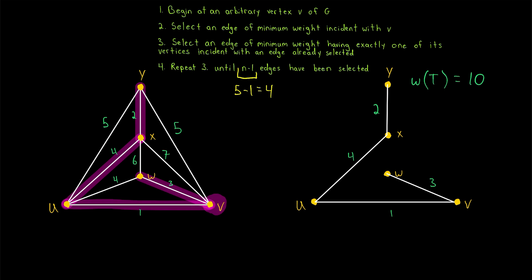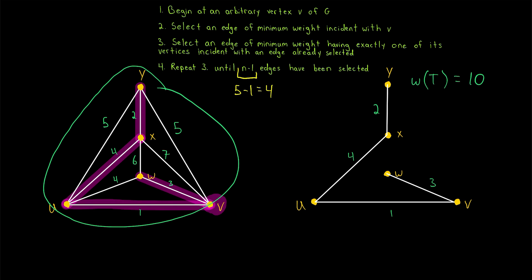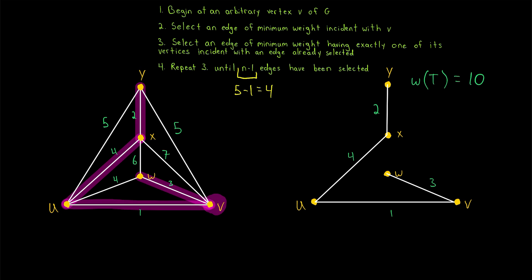The weight is the sum of the weights of the edges: 2 plus 4 plus 1 plus 3. Since we used Prim's algorithm to find this spanning tree, we know it is a minimum spanning tree — it is impossible to get a spanning tree of this graph with a lower weight. It may be possible to get a different spanning tree with the same weight, since minimum spanning trees aren't unique, but we can't get a spanning tree with less than weight 10. That's how Prim's algorithm works — pretty straightforward and slick.